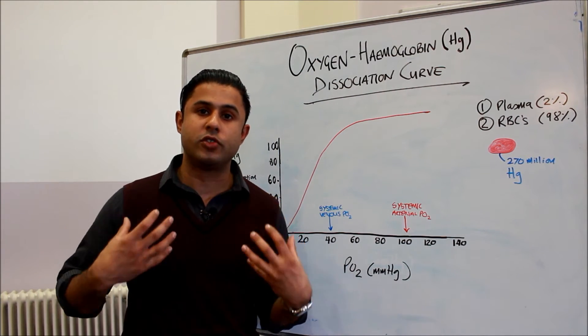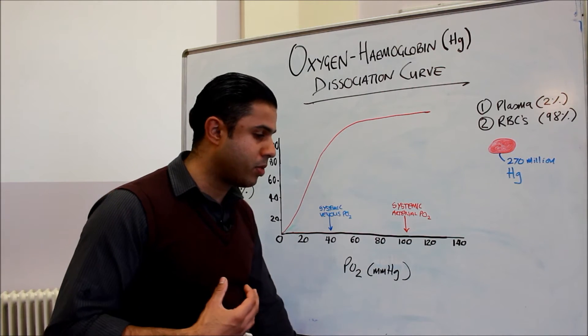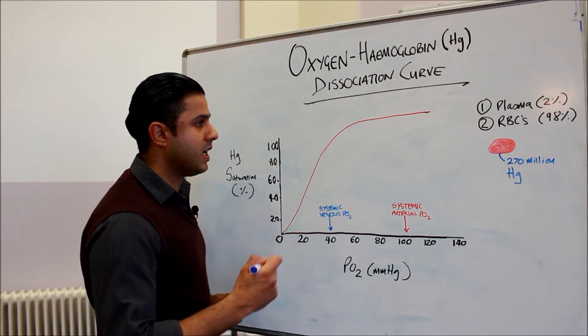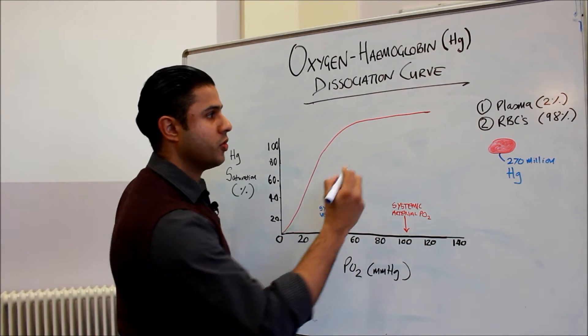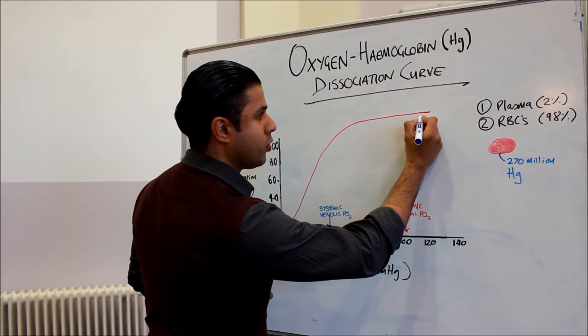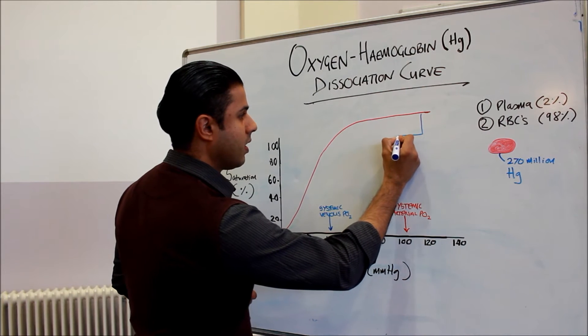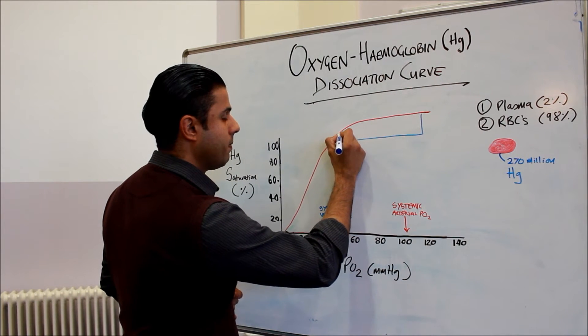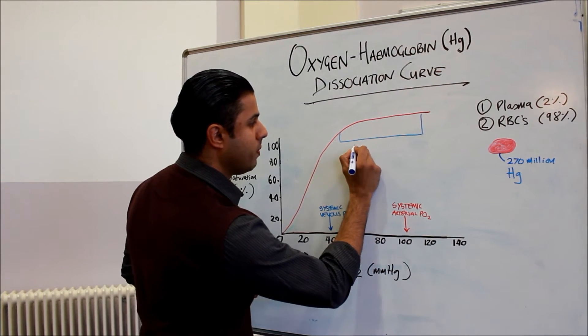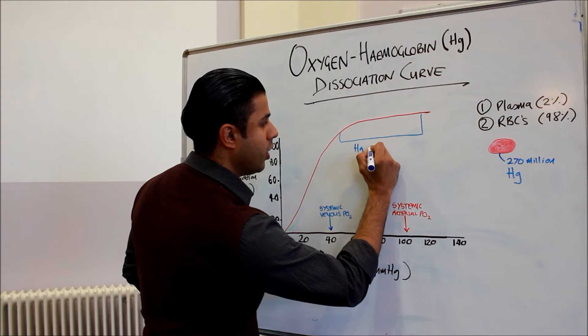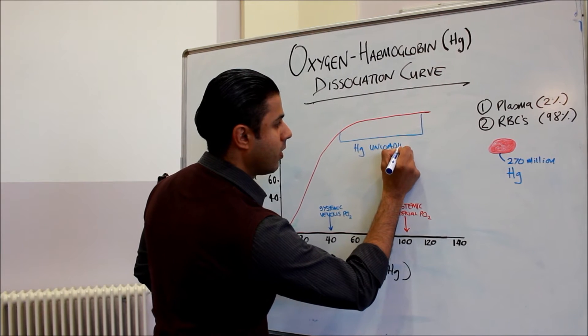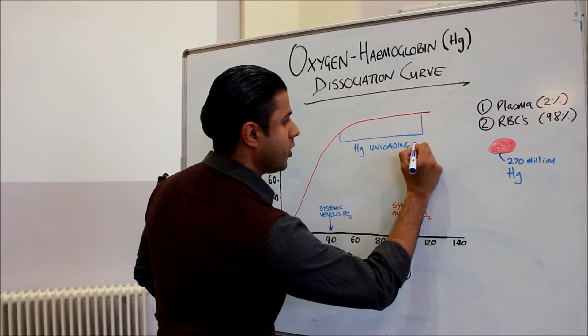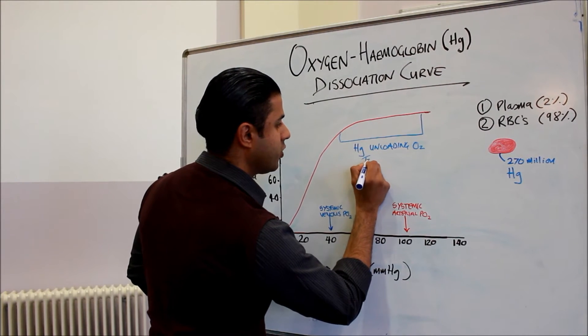Now the blood is obviously going to make its way from the aorta to the tissues where it's needed. And as that process actually happens, the hemoglobin is giving up the oxygen to the tissues. So essentially this portion here that we can see—this portion is the hemoglobin unloading oxygen to the tissues.